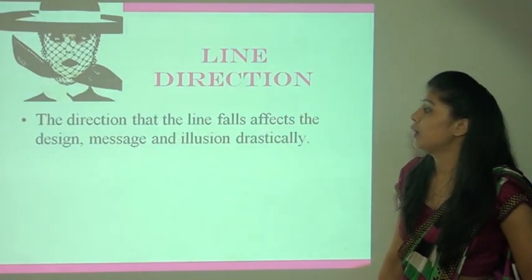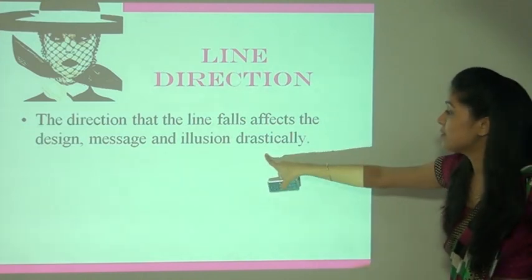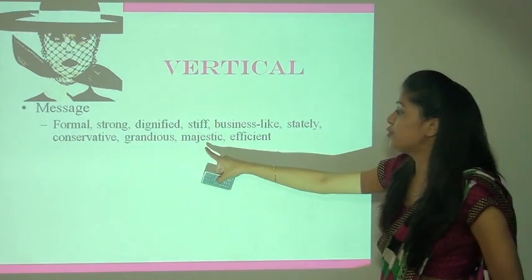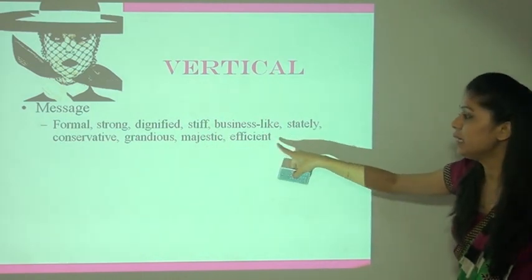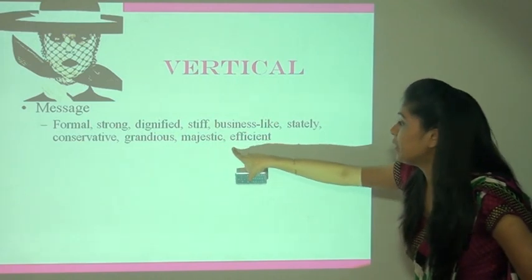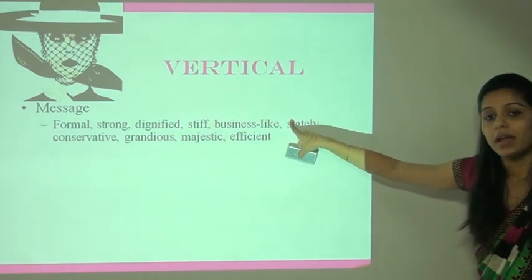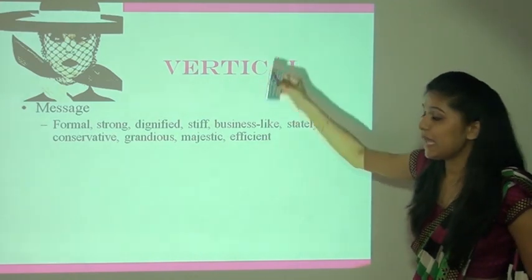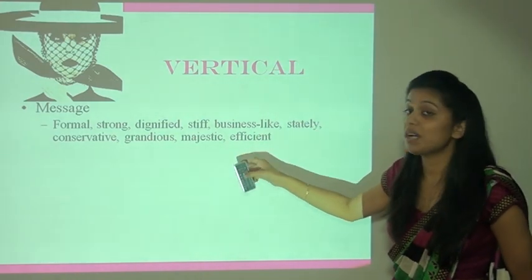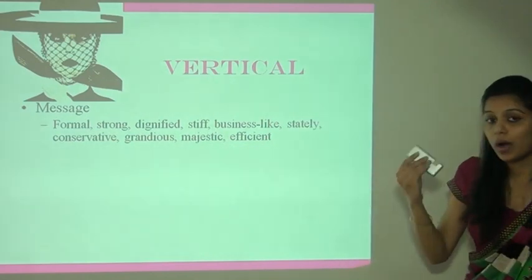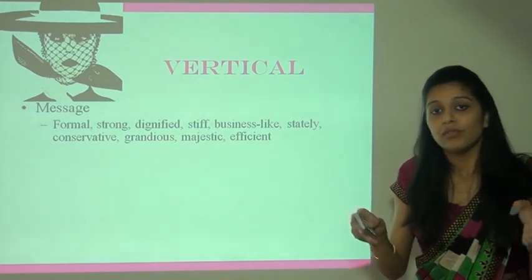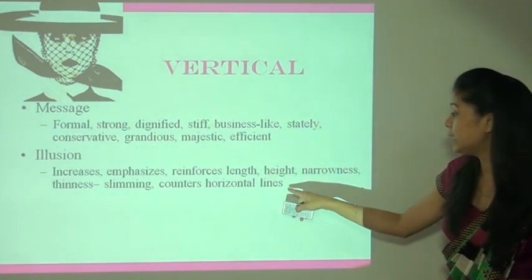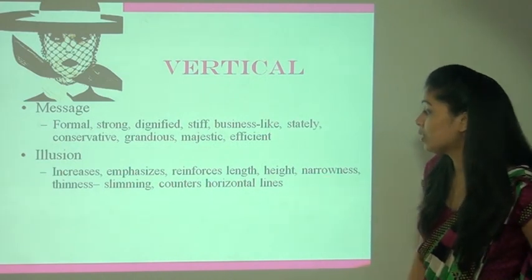Line direction — the direction that the line falls affects the design message and illusion drastically. Vertical lines — message: formal, strong, dignified, stiff, business-like, conservative, majestic, efficient. If somebody has a broad or thick figure, they should always wear garments with vertical lines — unka jo wardrobe hai woh vertical line wala hoga, to jo body hai woh wider nahi lagegi. Illusion: increases, emphasizes, and reinforces length, height, narrowness, and thinness.